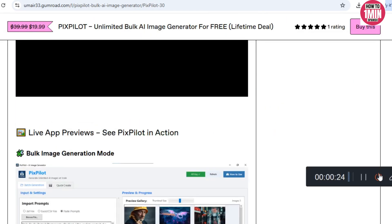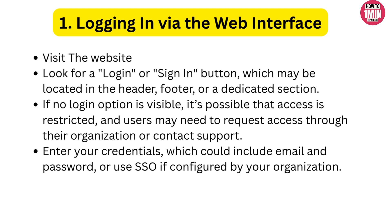First up, try the website. Head to the Entral AI website — that's entral.ai. Look for a login or sign-in button, usually in the header or footer. Since Entral AI is enterprise-focused, your login might be tied to your organization account, so you might need a specific URL or single sign-on like OAuth or Active Directory. Just enter your email and password, or follow the SSO prompts if that's set up.